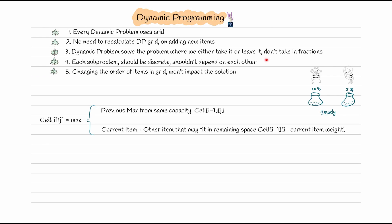Fourth, each sub-problem should be discrete and independent — picking one item should not impact the value of the next. Fifth, changing the order of items does not impact the solution — swapping gold, bronze, and silver rows gives the same result. The formula we discussed: take the maximum of either the previous row's value at the same capacity, or the current item plus the best value for the remaining space. Thank you, bye.